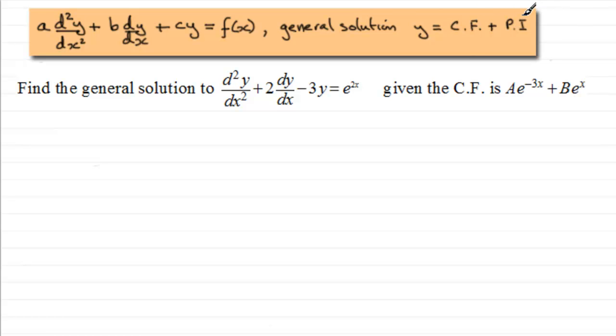In this video, we're going to be looking at how we solve these equations when f of x is an exponential function, e to the 2x in this example. We're going to find the general solution to d²y/dx² plus 2 times dy/dx minus 3y equals e to the power 2x, given that the complementary function is ae to the minus 3x plus be to the power x.